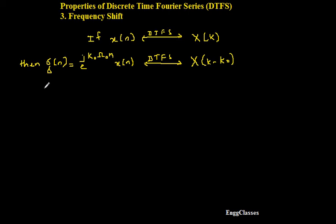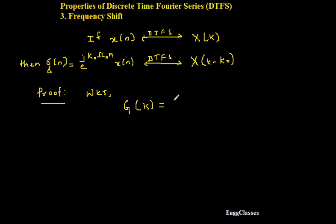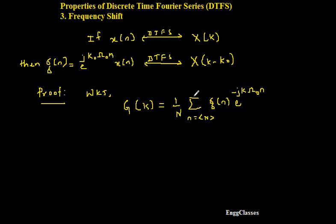Now we shall consider the proof for the frequency shift property. We know that the expression for DTFS is: G of k is equal to 1 over N, summation over the range capital N, of g of n times e to the power minus j k omega-naught n. This is the expression for DTFS.